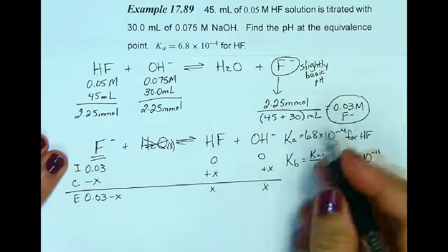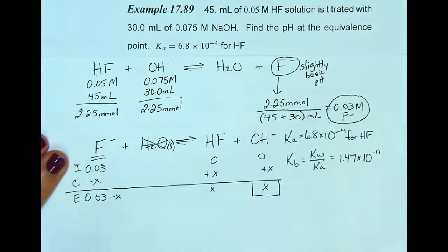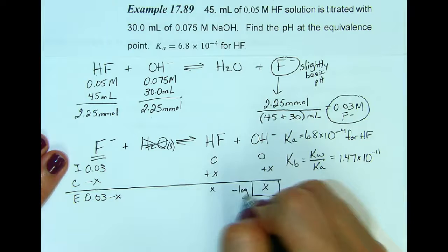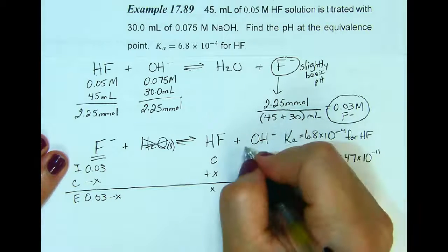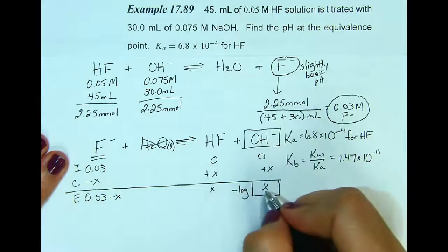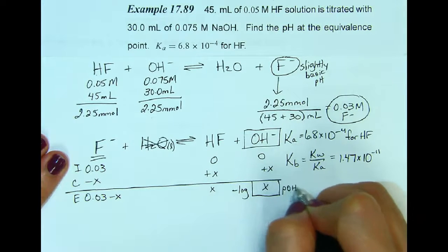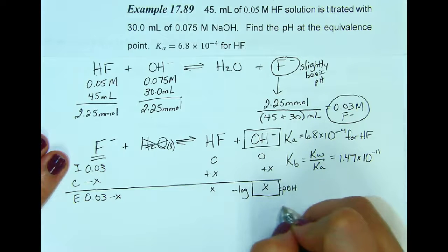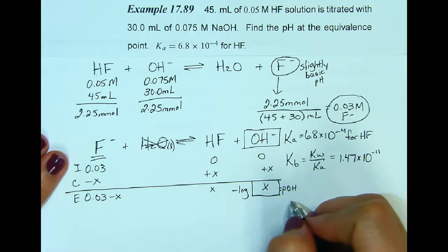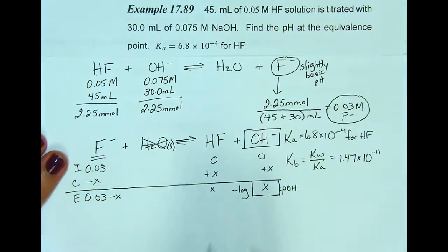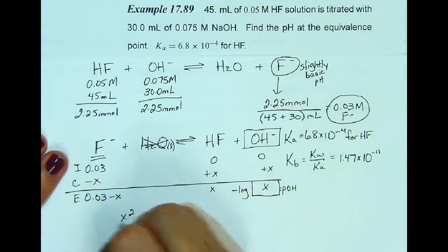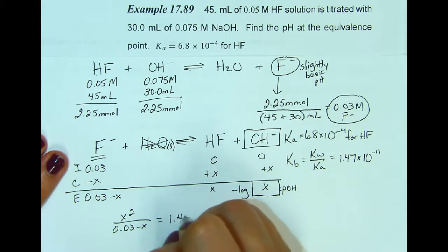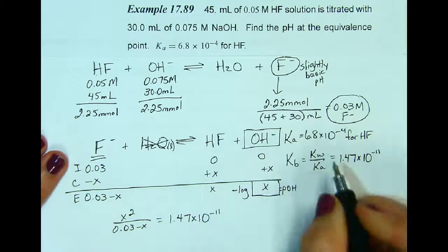My goal is to find out what X is because if I take the negative log of X, which is the hydroxide concentration, I would get the pOH and then from the pOH I can get the pH. So let's solve this ICE table. We'll get X squared over 0.03 minus X equals 1.47 times 10 to the negative 11.